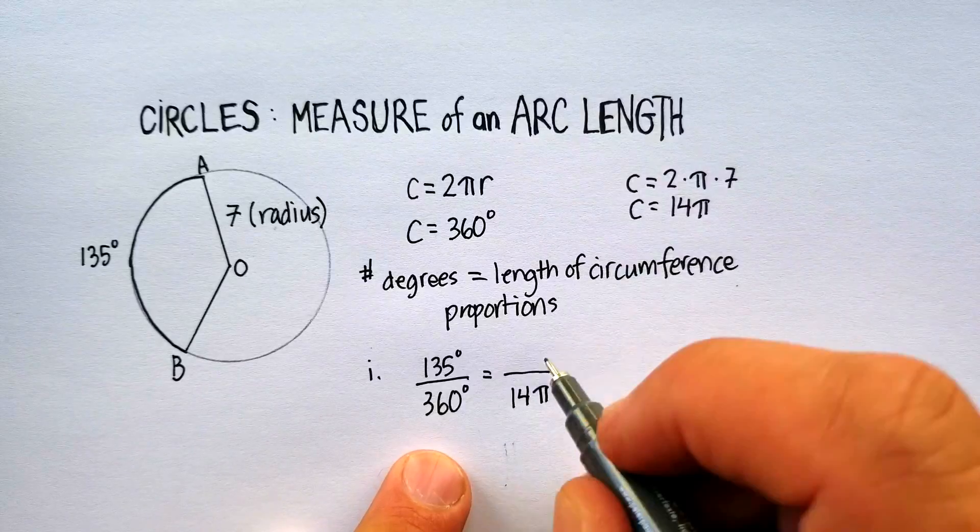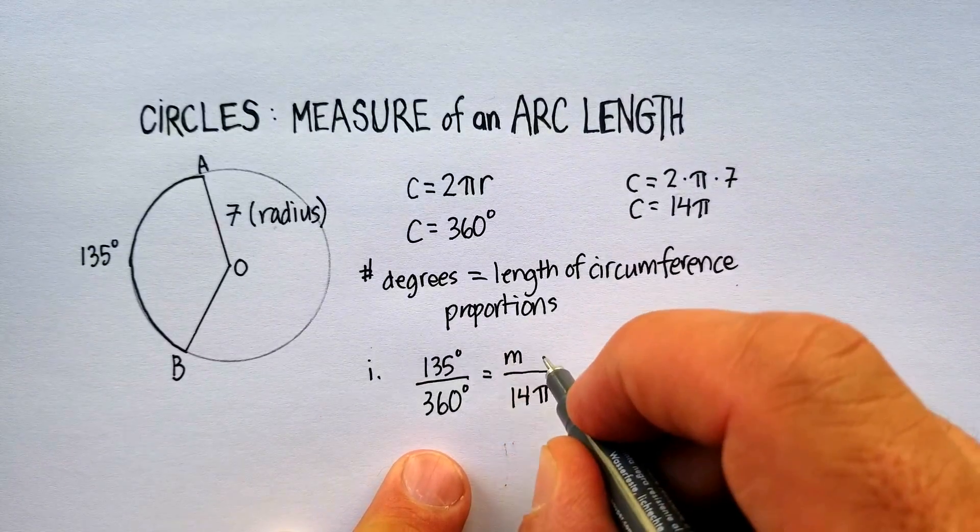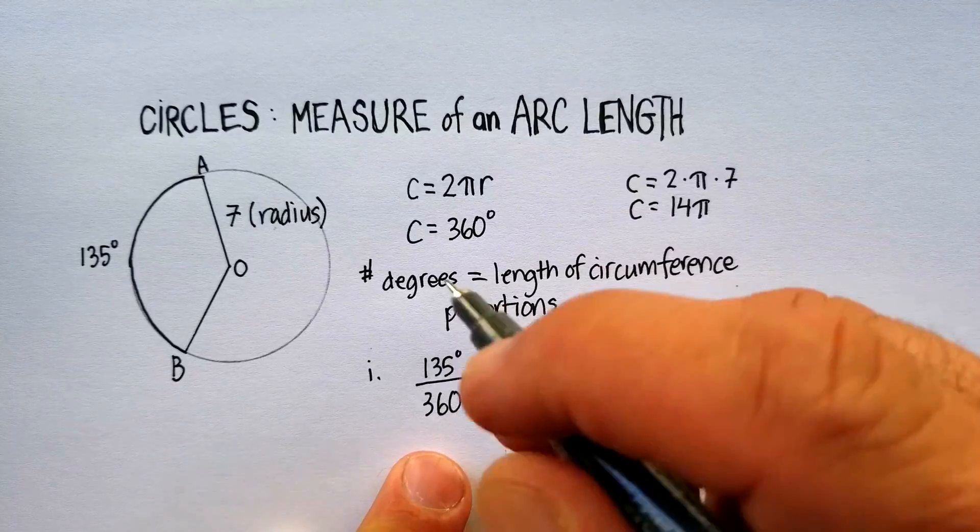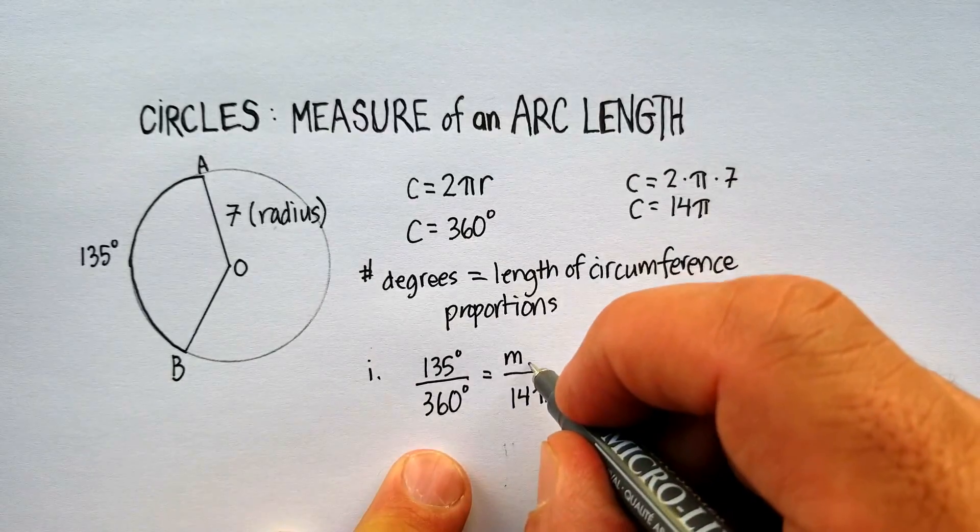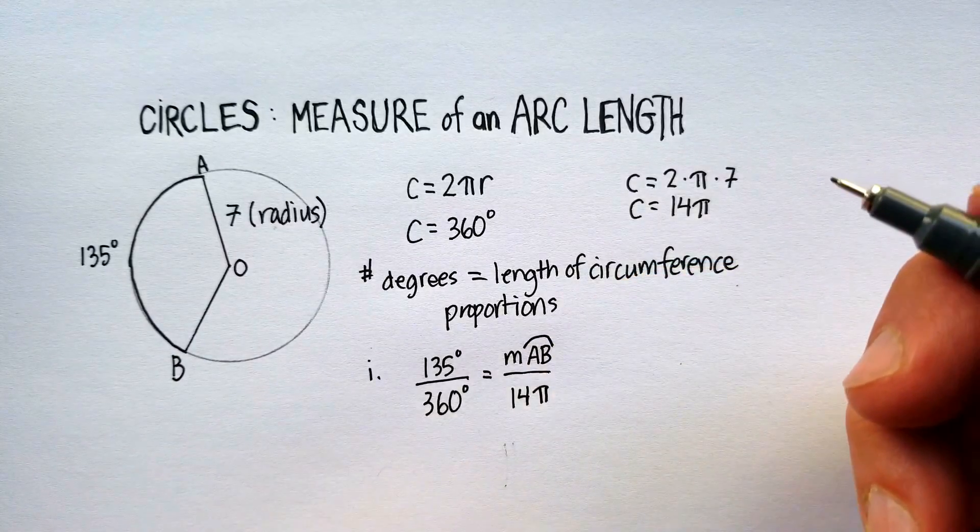And this is the length that we're trying to come up with. So we're going to say the measure of the arc, in this case it's arc AB, and we'll just write it like this with the appropriate symbol.